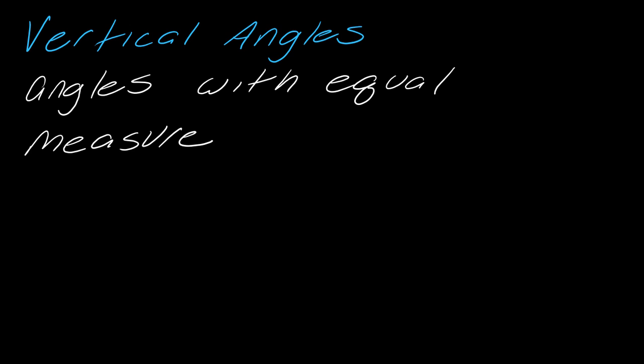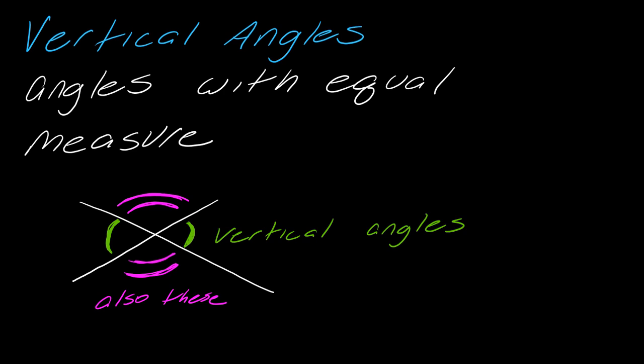Let's first talk about vertical angles. These are just angles with equal measure. We make them like this so you can cross two lines. These two angles are called vertical angles and they are also equal in measure.